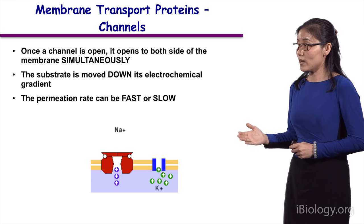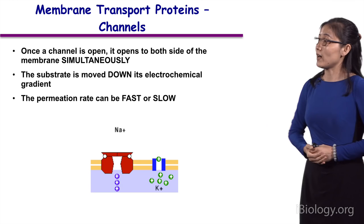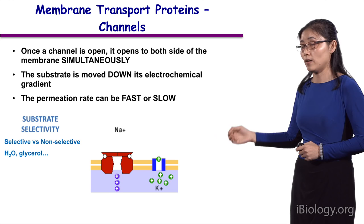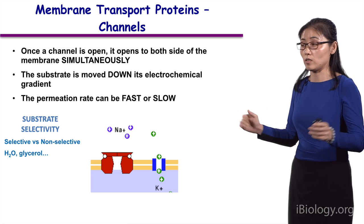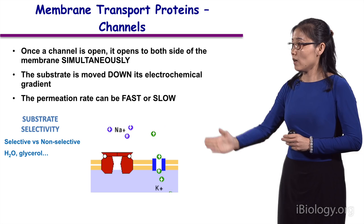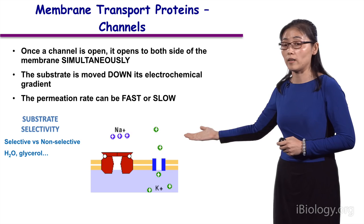I have to remind you that the permeation rate of a channel can be fast or slow. Therefore, the permeation rate cannot be used to distinguish a channel from a transporter. How to classify a channel? We can do so by either substrate selectivity — for example, there are selective versus non-selective channels; there are non-selective cation channels that can permeate different species of ions. And more interestingly, as long as a transport protein allows penetration of the substrate along its translocation path and opens to both sides simultaneously, it's called a channel. So there are not only ion channels — there are also water channels, glycerol channels, or even protein channels.